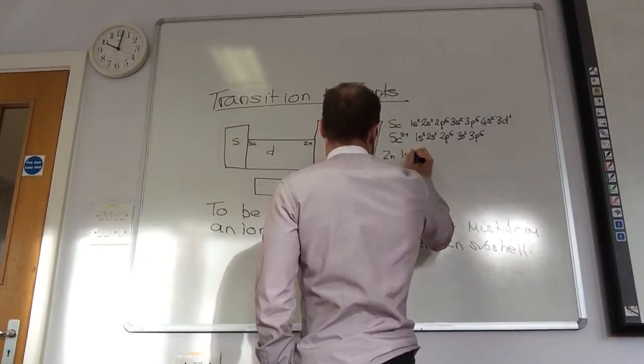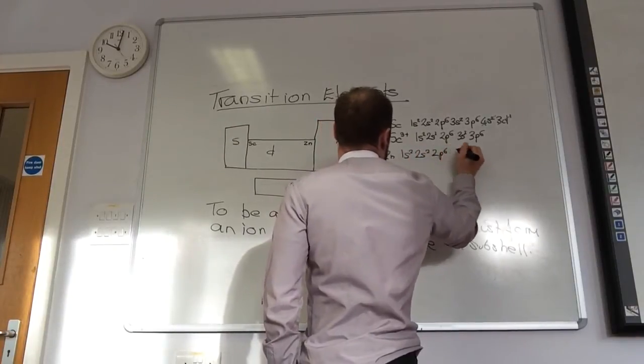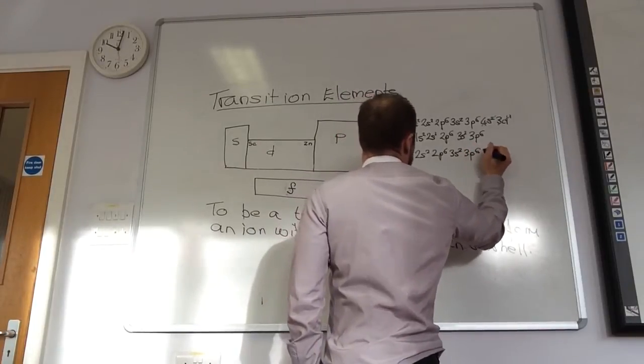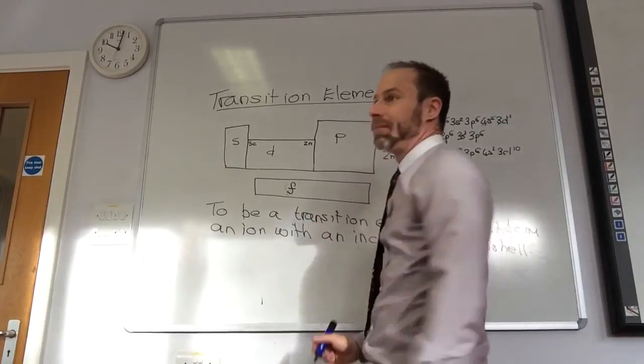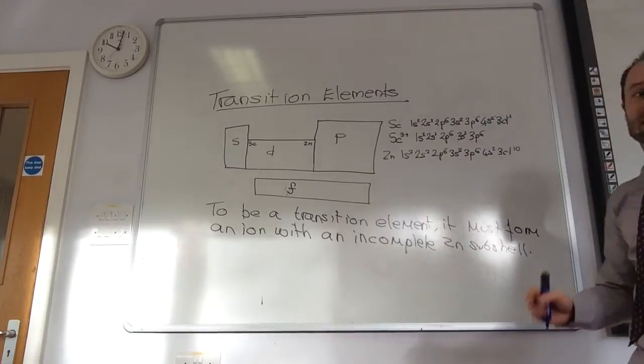Zinc is 1s2, 2s2, 2p6, 3s2, 3p6, 4s2, 3d10. So, that is the electronic configuration of an atom of Zinc.